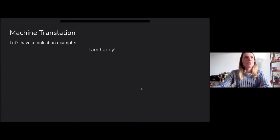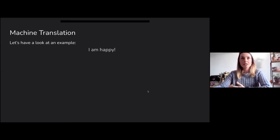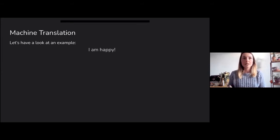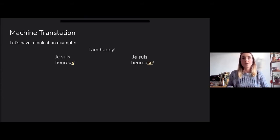That brings us to the actual topic of machine translation. If you take a very simple sentence like 'I'm happy,' you would basically need to know the gender of the person saying the sentence in order to translate it correctly. This can either become 'je suis heureux,' with a masculine ending, or 'je suis heureuse,' for when it's a woman or girl speaking, or someone who prefers the female gender.